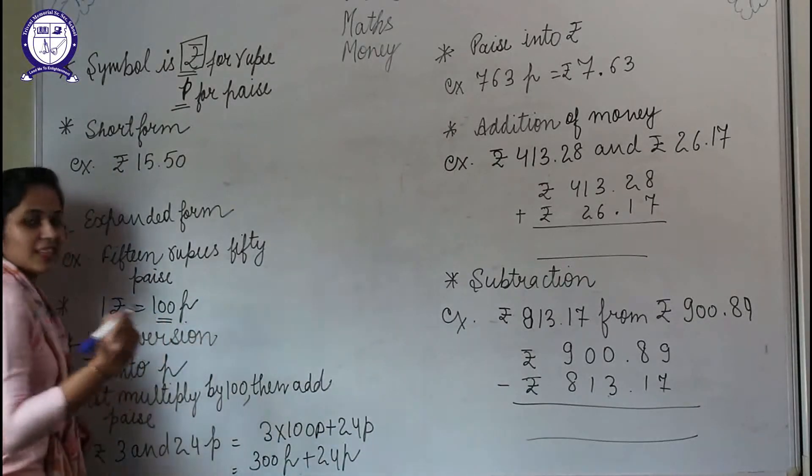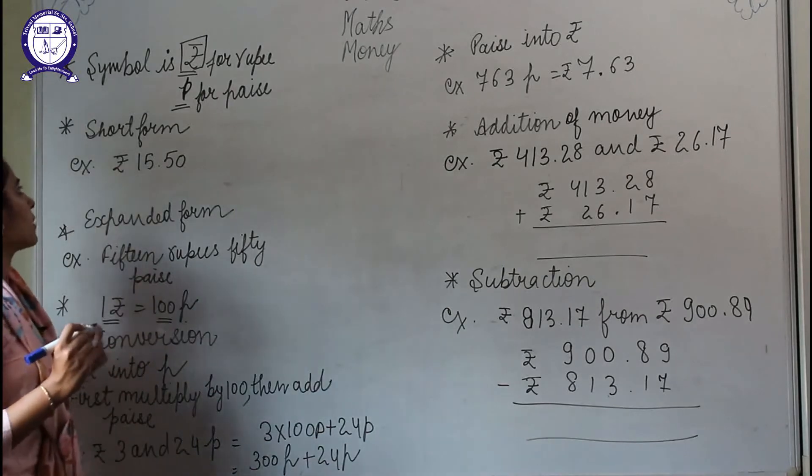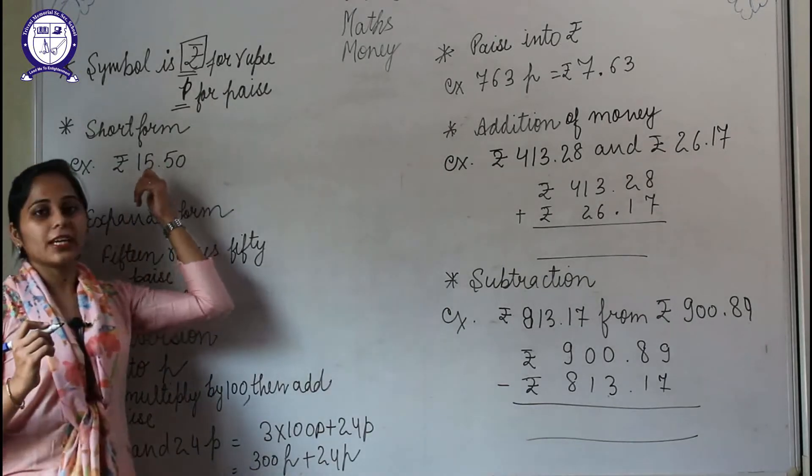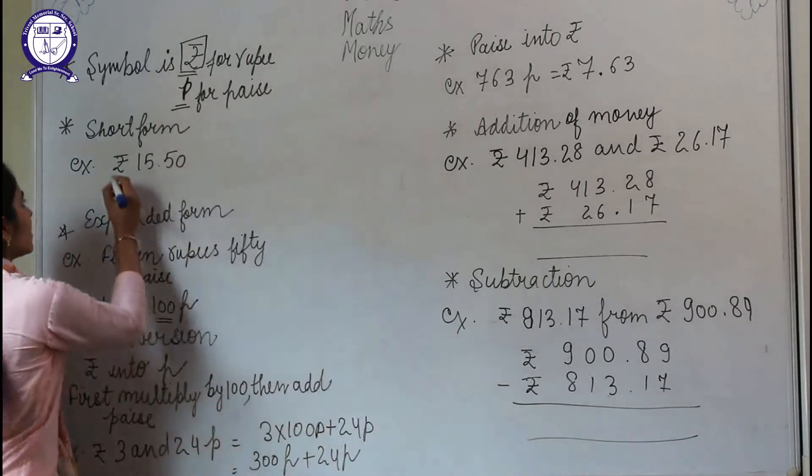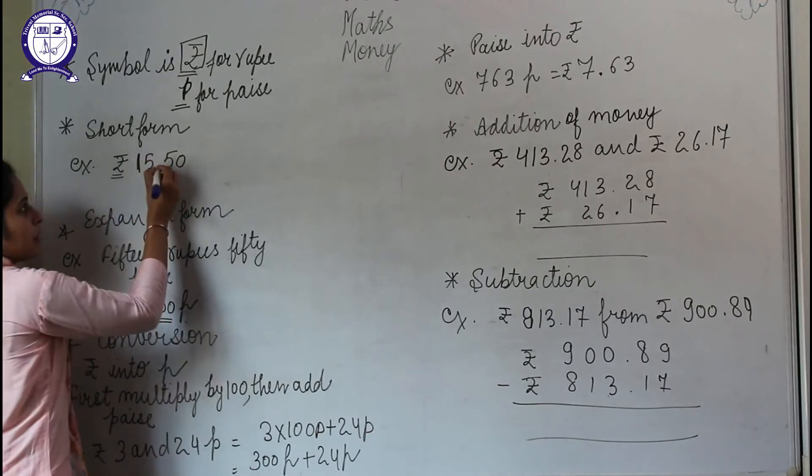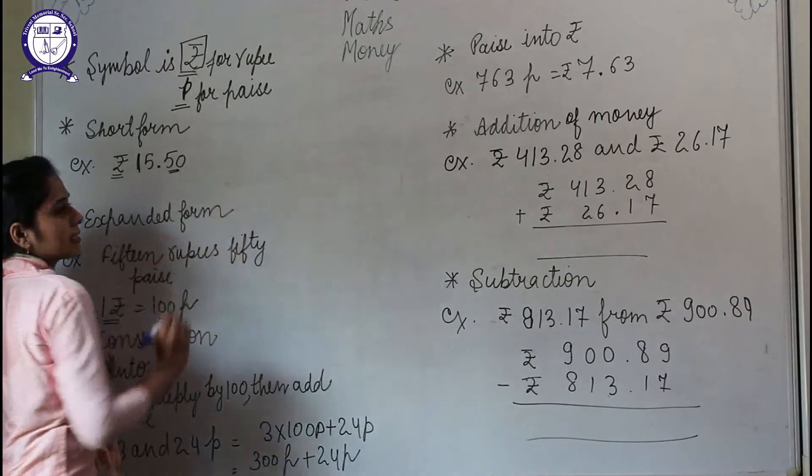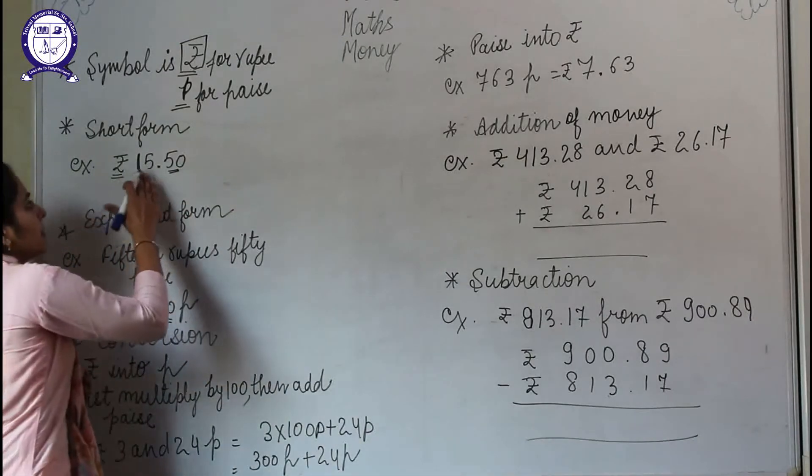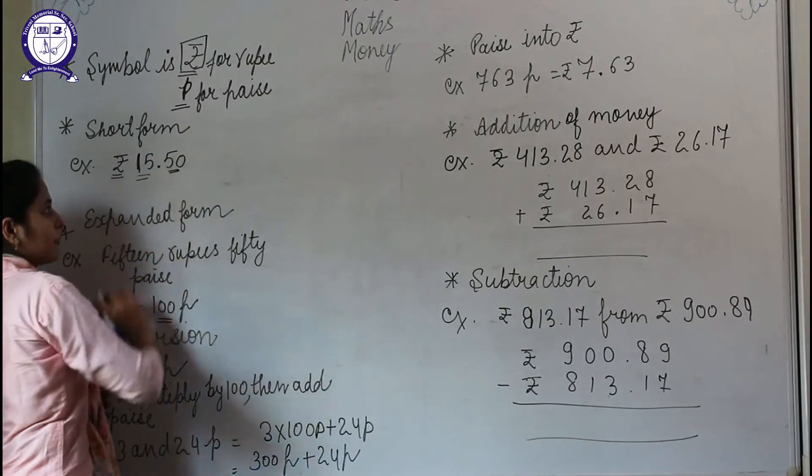If someone is having 1 rupee, it means he or she is having 100 paise. Now, the short form to write rupees: how will you write rupees 15 and 50 paise? You will write the rupee symbol, then at the left-hand side of the point write the number denoting rupees, and the right-hand side will be written as paise. So ₹15.50 means the person is having 15 rupees as